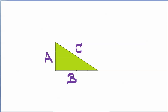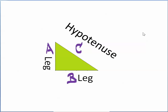Here we have a right triangle. We denote the sides — the edges of this right triangle — by calling them A, B, and the hypotenuse is always called C. A is a leg, B is a leg, and C is the hypotenuse. When we're talking about a right triangle, we don't refer to these as the sides; we refer to them as a leg, a leg, and a hypotenuse.